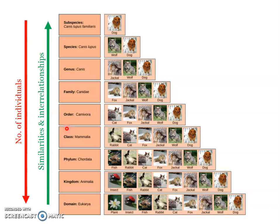The seven obligatory taxonomic categories are considered to be the basic categories and they are: kingdom, phylum, class, order, family, genus, and species. Species is the lowest category, the most fundamental, while kingdom is considered the highest one in the hierarchy.